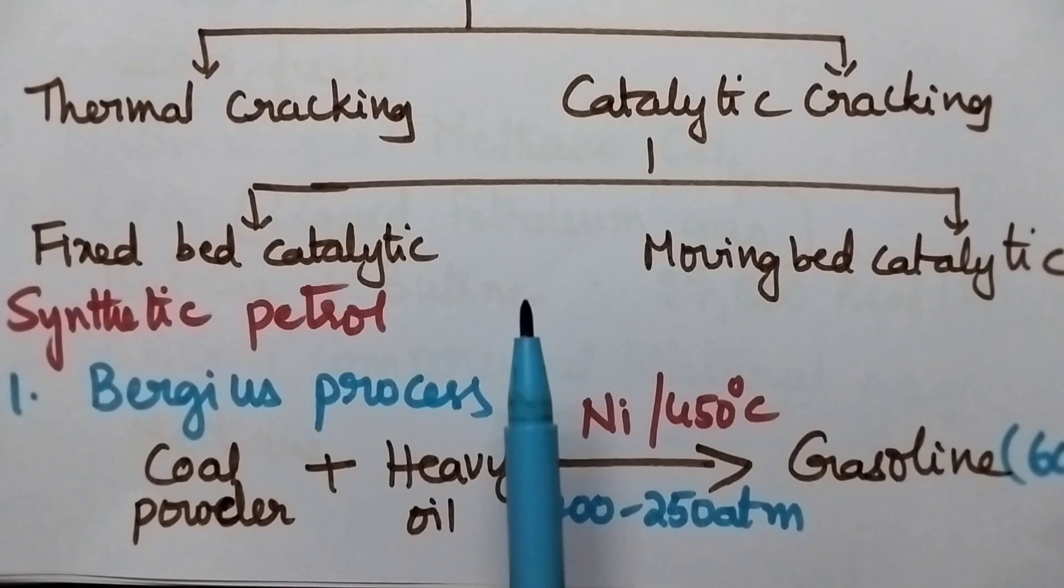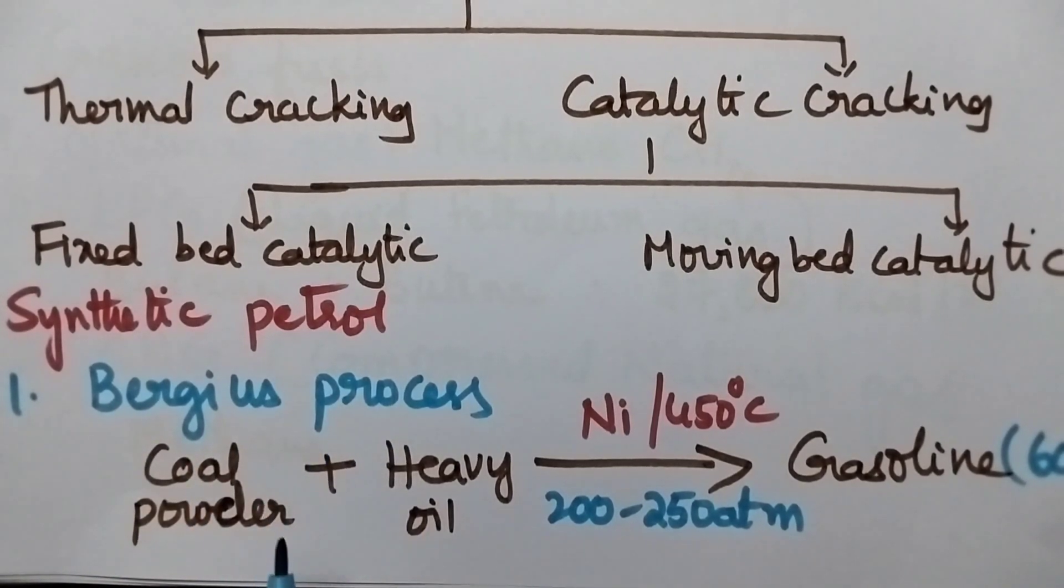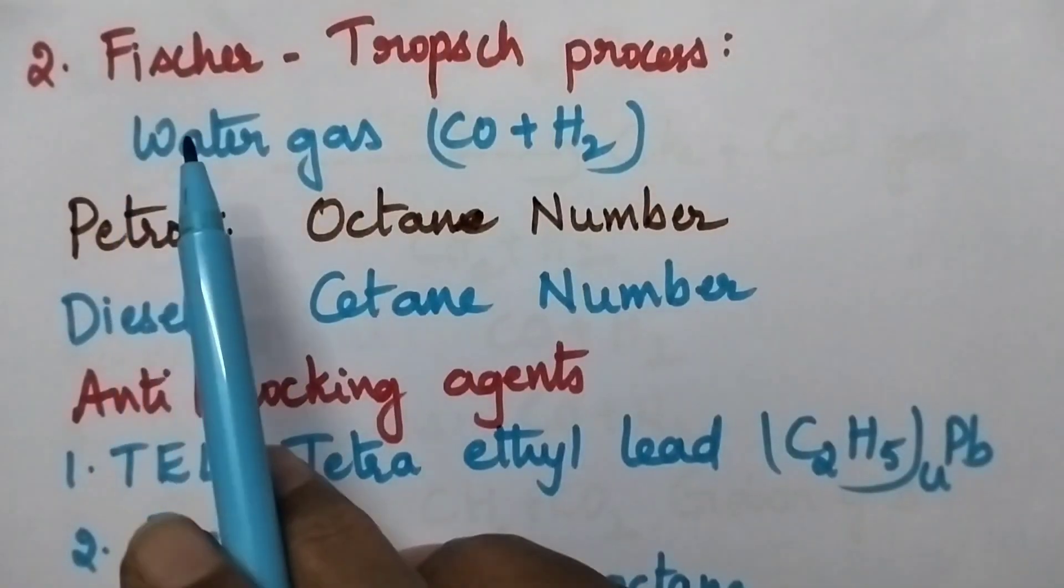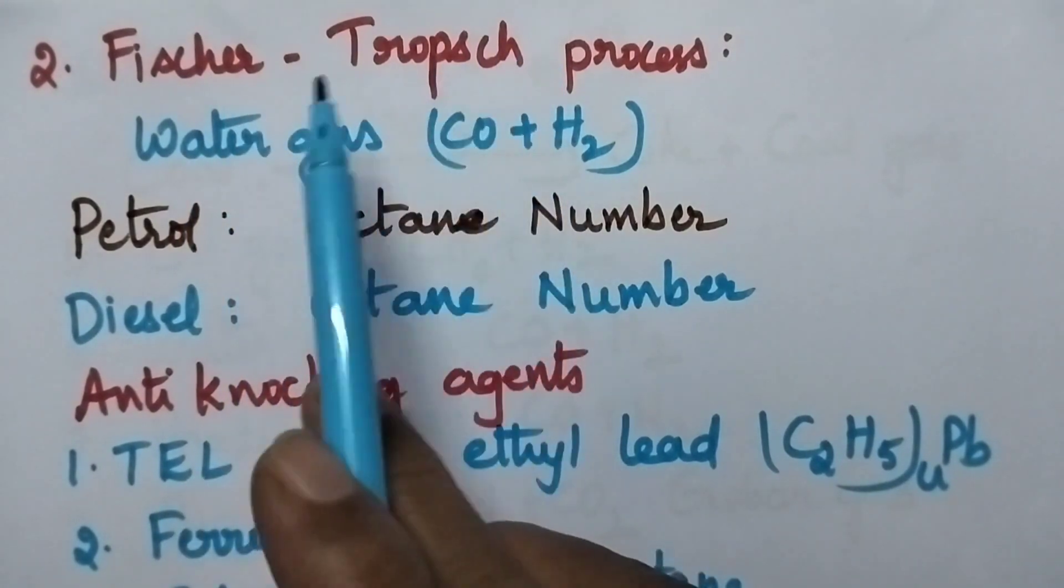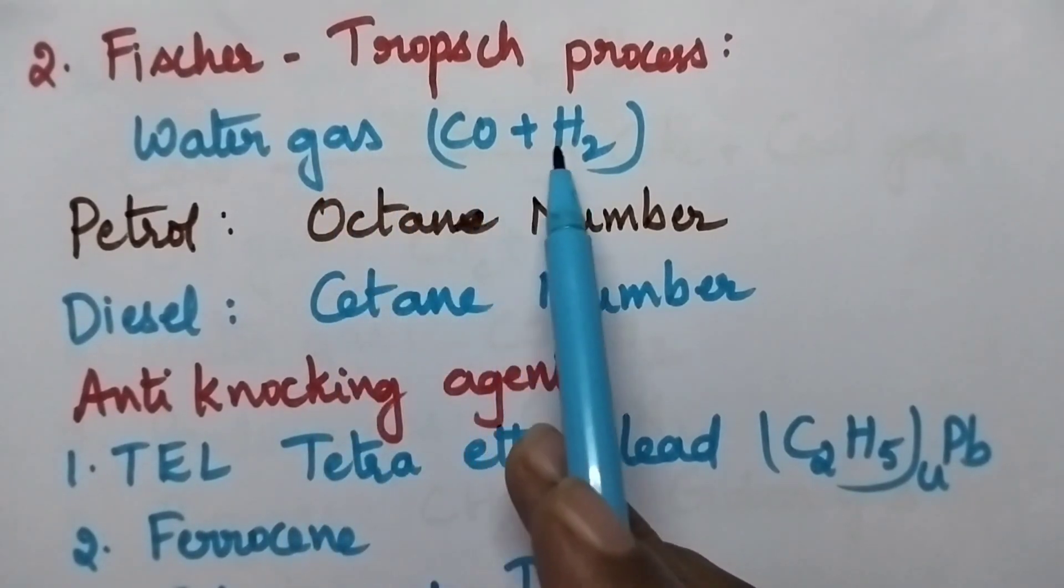Moving to the synthetic petrol, it can be obtained by following two different methods. The first one is Burghier's process. Here coal powder and heavy oil is used as the raw material. Nickel is the catalyst. The temperature is maintained at 450 degree centigrade and pressure at 200 to 250 atmospheres. Then it results in the formation of gasoline. The yield of the reaction is 60%. Second process is Fischer-Tropsch process. Here water gas is used as the starting material and its composition is CO plus H2.